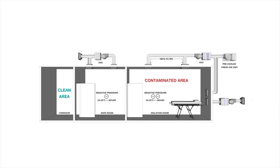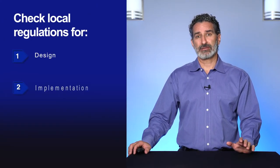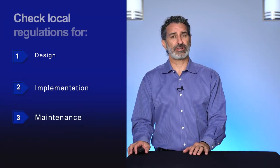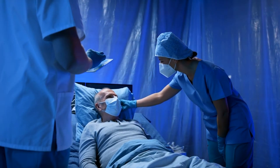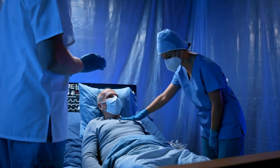Airborne infection isolation rooms have a level of complexity in their design, installation, and operation, and there are jurisdictional considerations. Your local regulations should dictate how you design, implement, and maintain your AIIRs. In states like California, OSHPD may need direct input or approval. A local fire department may have requirements about building modifications. You may also need to update your emergency operations plan due to changes in access, egress, or other life safety considerations.